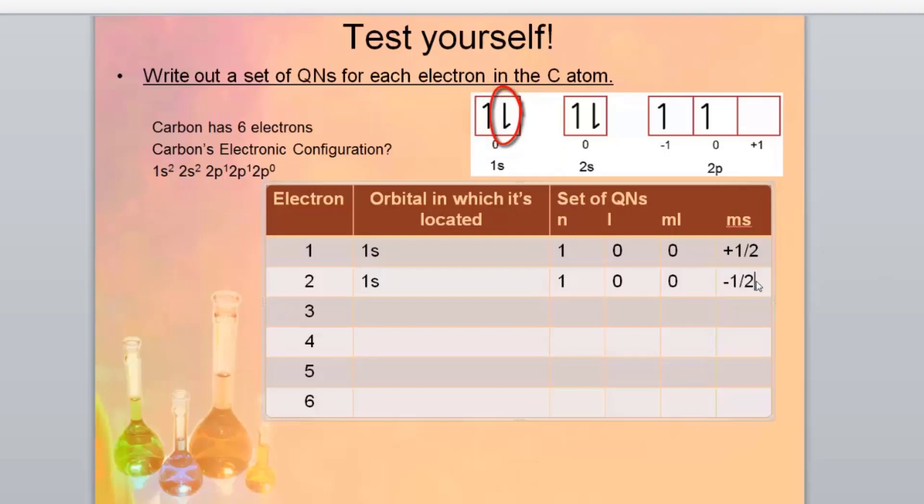And our ms would be plus a half for one of them and minus a half for the other. So it doesn't matter if you have the plus a half or the minus a half on the top as long as the other one has the opposite one. So going for our third and fourth, we're now in our 2s. It's going to be the same but we're going to have a 2 here because we're in our second energy level. Still got s orbitals and we've got a plus a half and a minus a half.